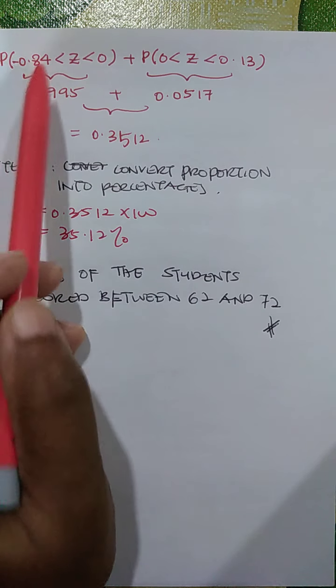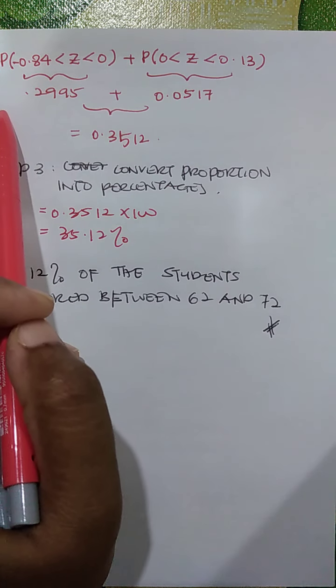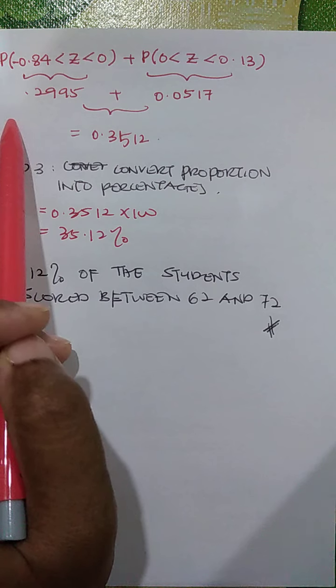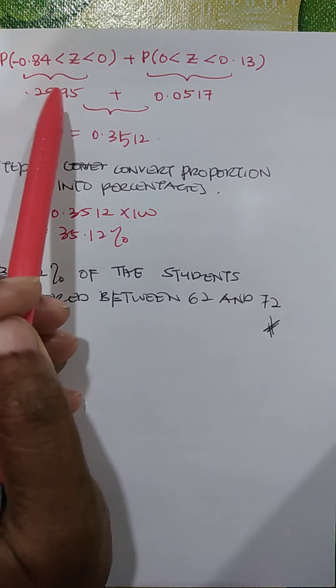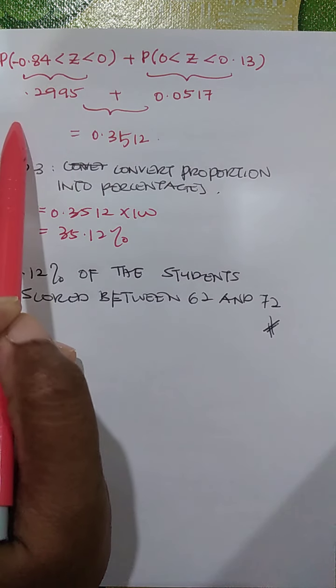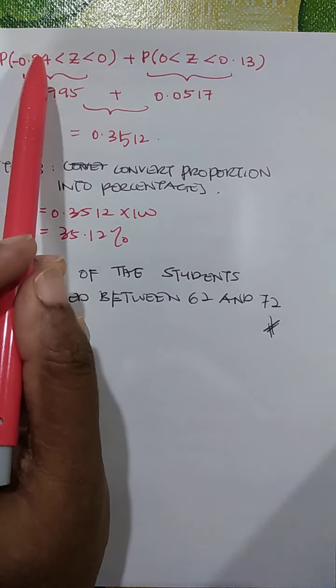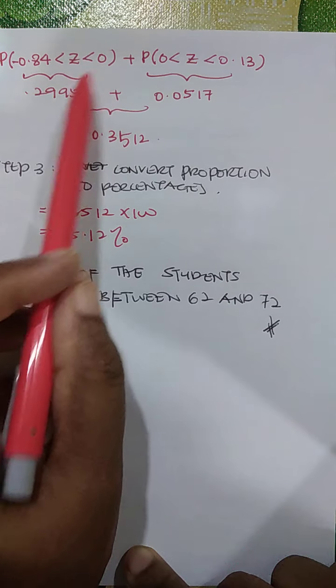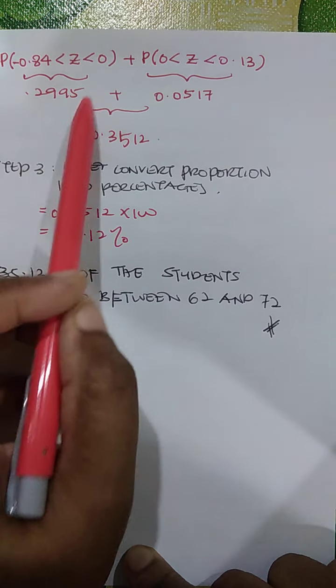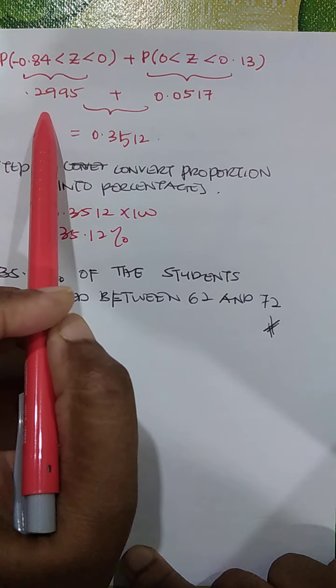In the table, there is no negative values. Remember, normal curve, it is symmetrical. So that means, negative 0.84 to 0 or 0 to 0.84, it is the same area. So you will get 0.2995.